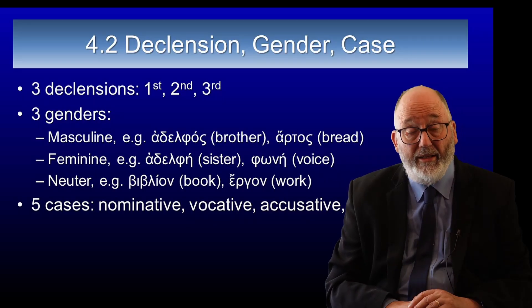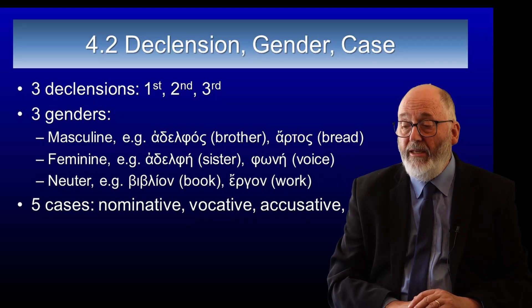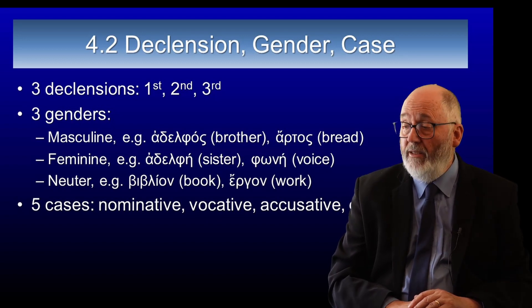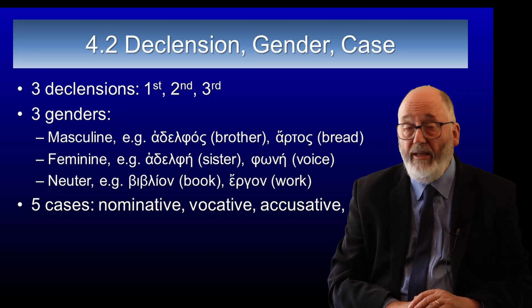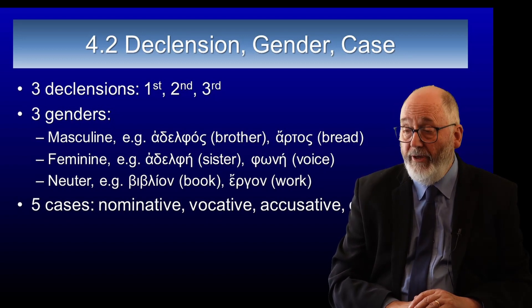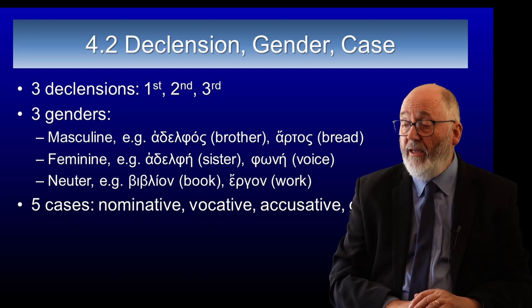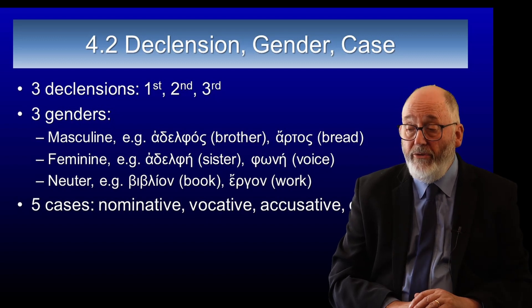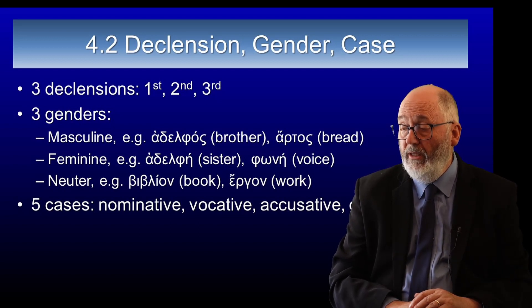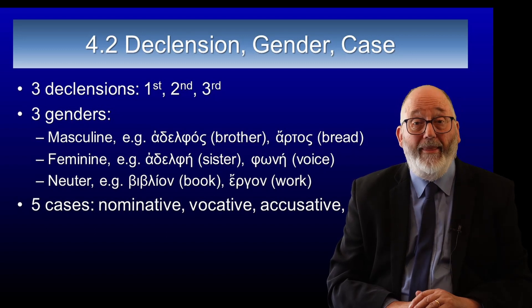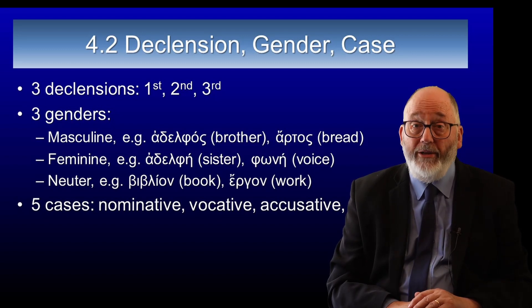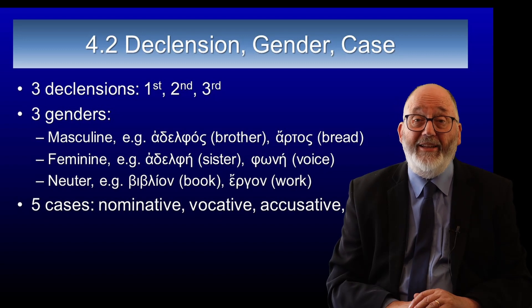We're going to begin with the second declension nouns and the three genders. There are masculine, feminine, and neuter nouns. Some masculine nouns: adelphos, which means brother, and artos, which means bread. There are feminine nouns like adelphi (sister) and phonē (voice), and there are neuter nouns like biblion (book) and ergon (work). Now, if you've only ever spoken English, it will surprise you to discover that everything has a gender.